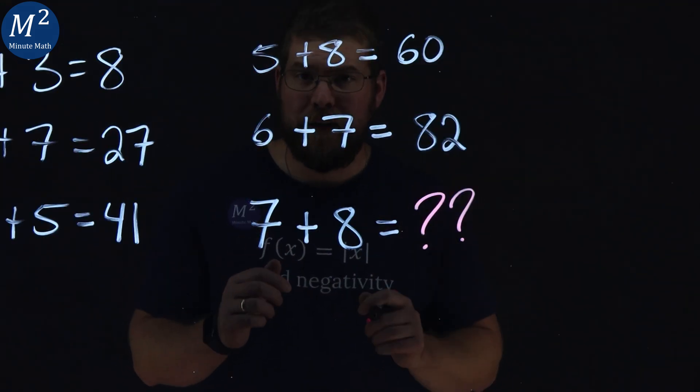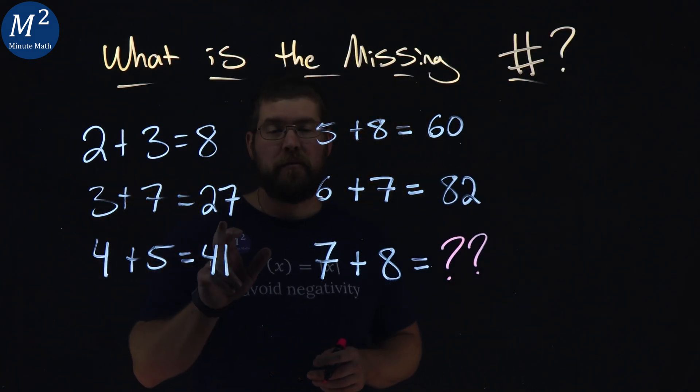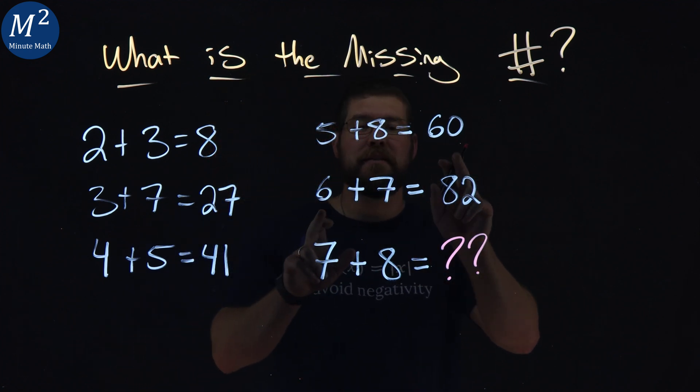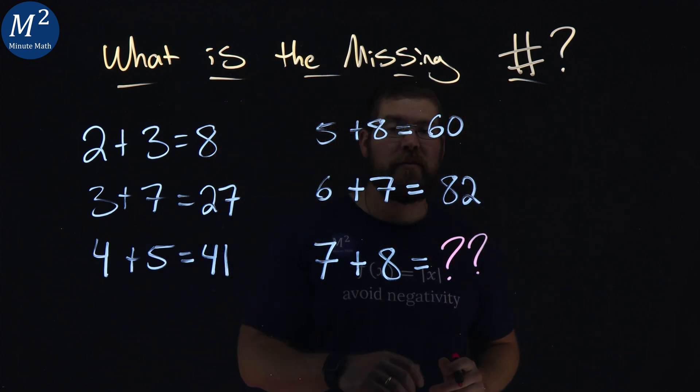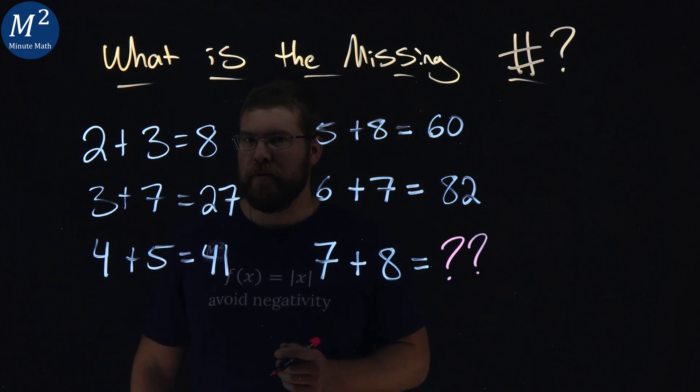What is 7 plus 8? Our puzzle has 2 plus 3 is equal to 8, 3 plus 7 equals 27, 4 plus 5 equals 41, 5 plus 8 is 60, 6 plus 7 is 82, and 7 plus 8 is, well, got to figure that out. So let's dive in and see what the answer is.